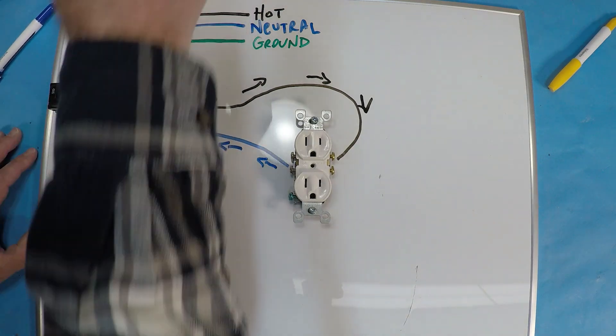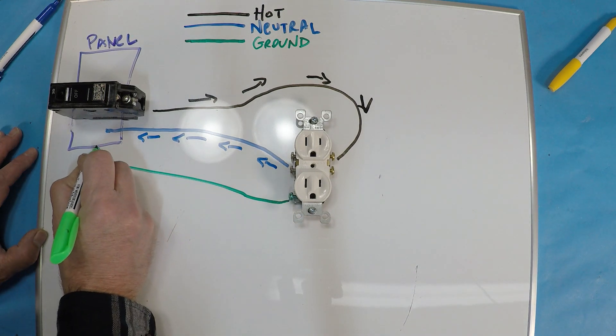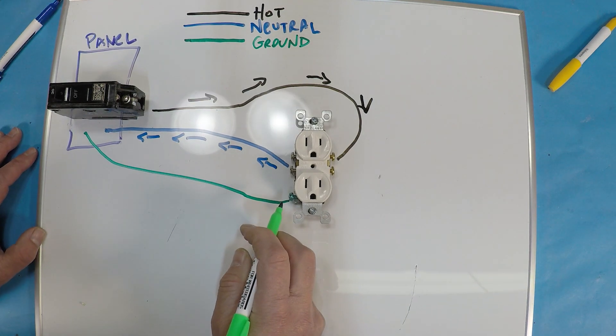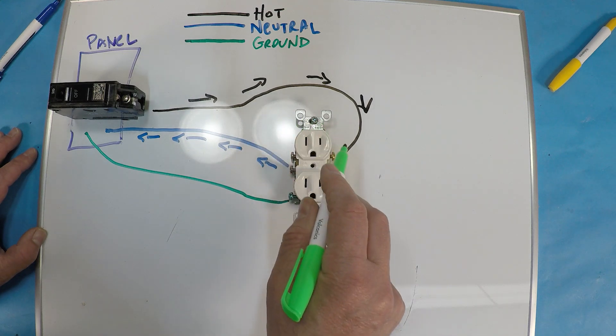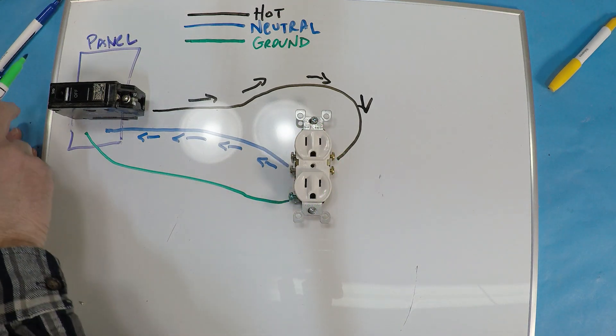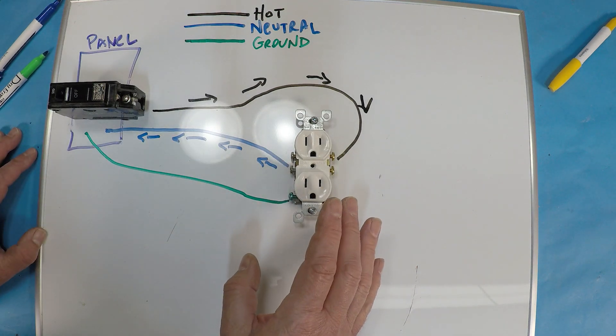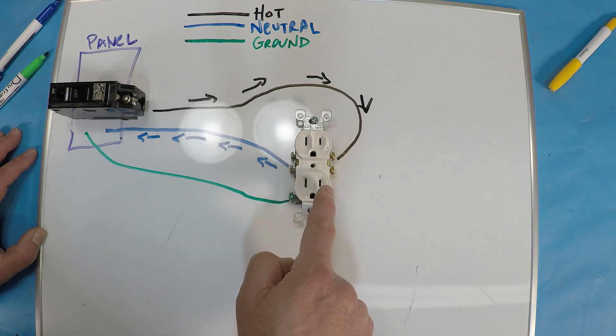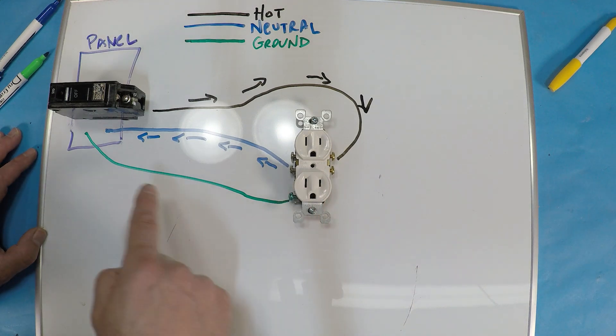You've got your ground coming off of the ground screw here going back and attaching to the ground bar. This is in the event of an issue where the circuit is not going back. So let's say you have a fault—what you want to have happen is for the current to find its path of least resistance back to the electrical panel so it can complete its circuit.